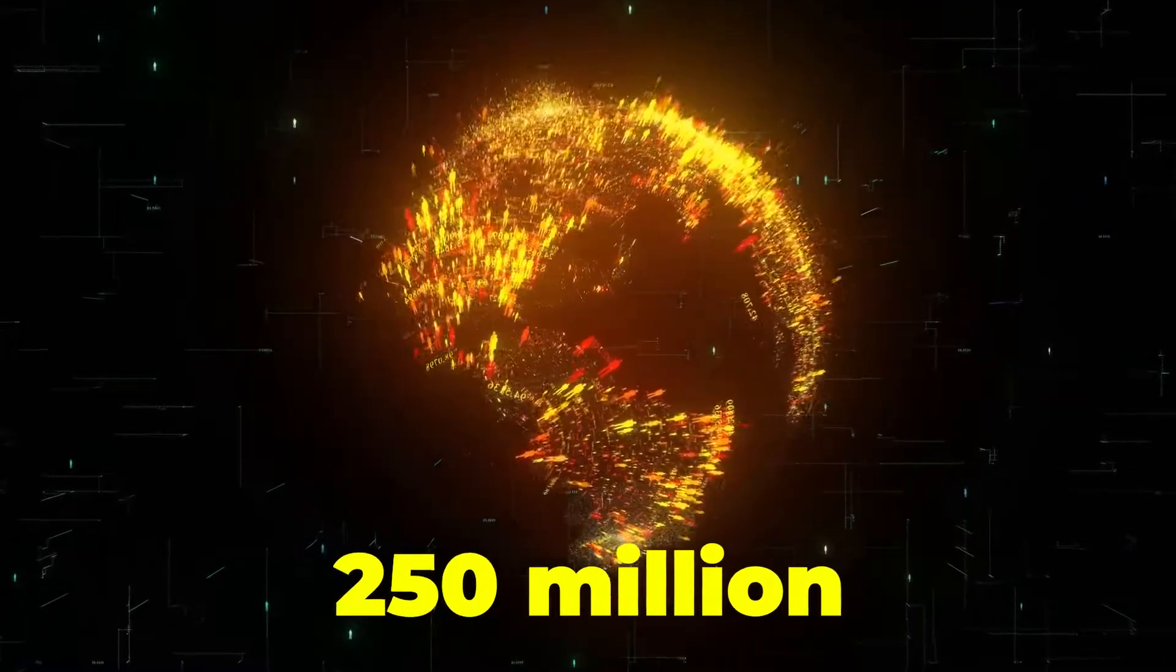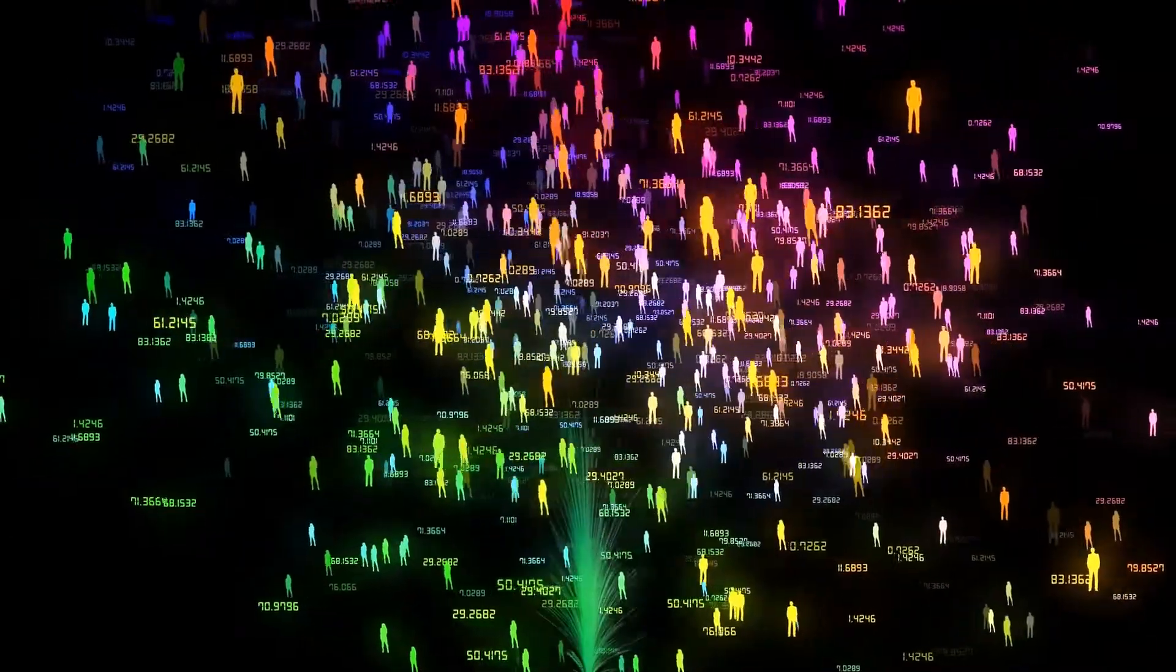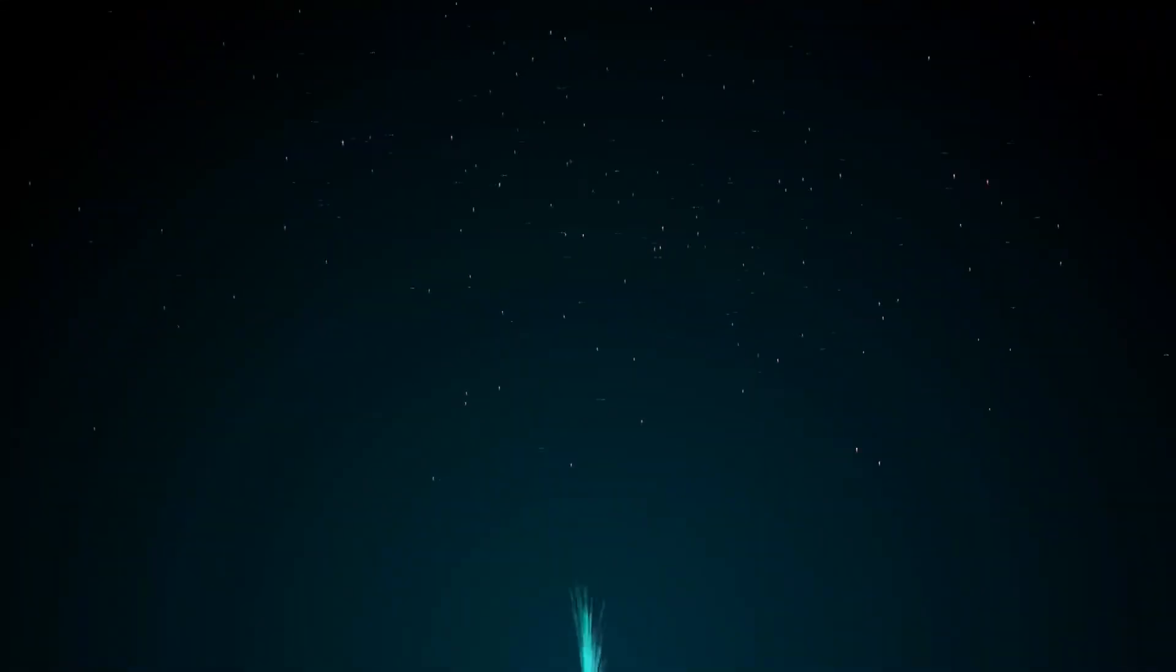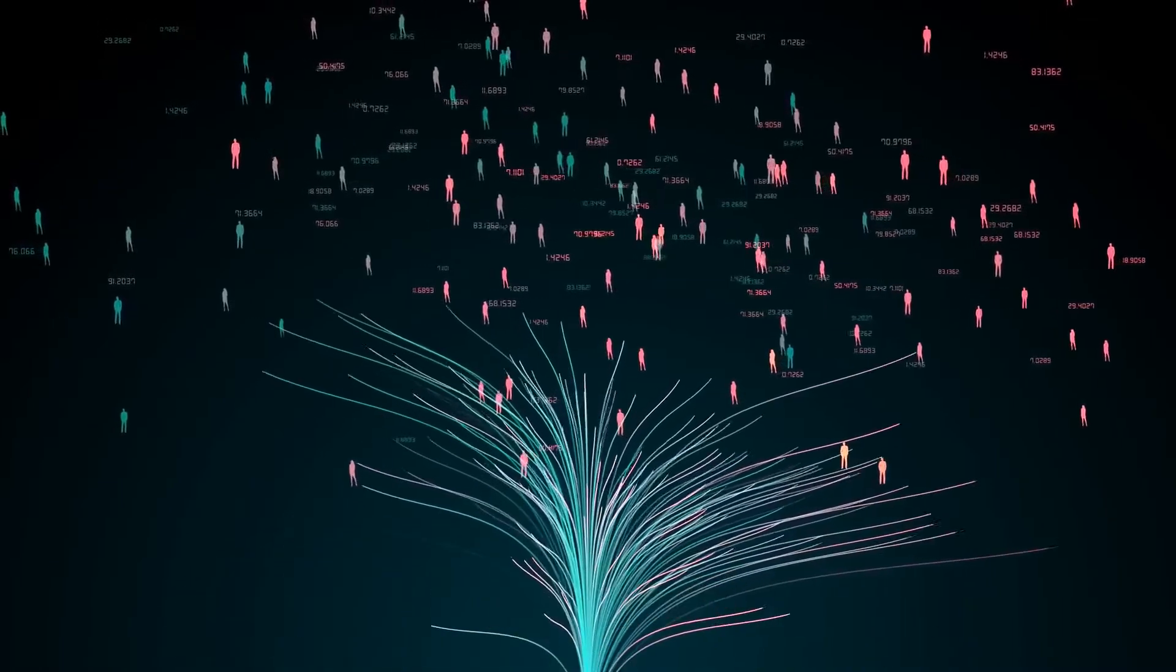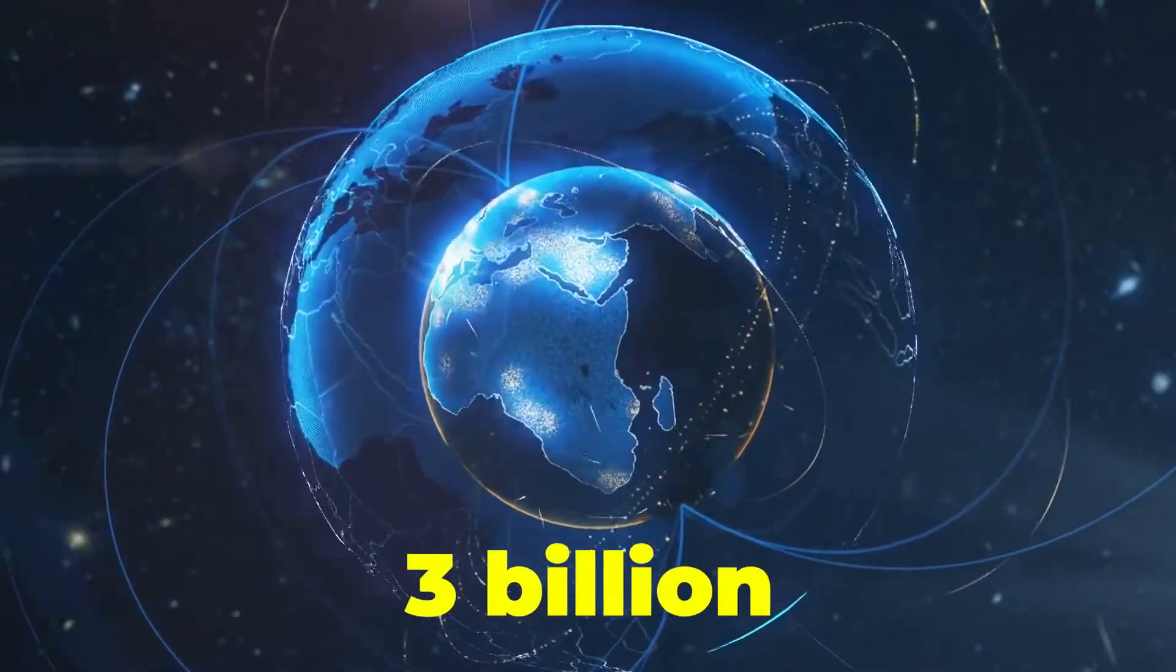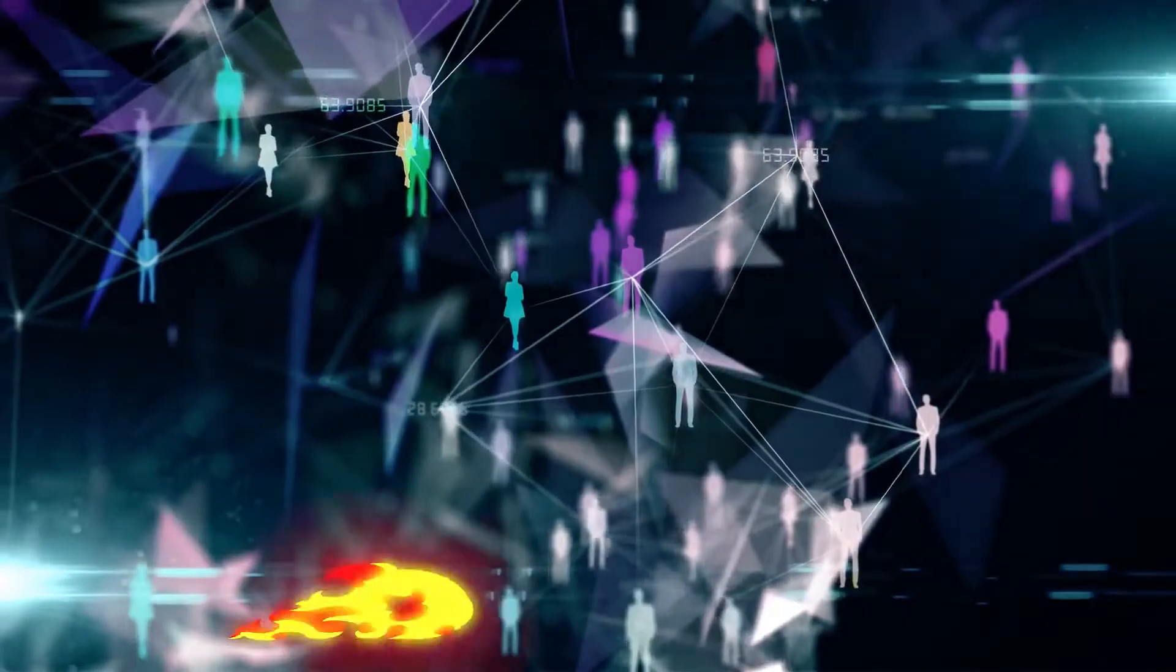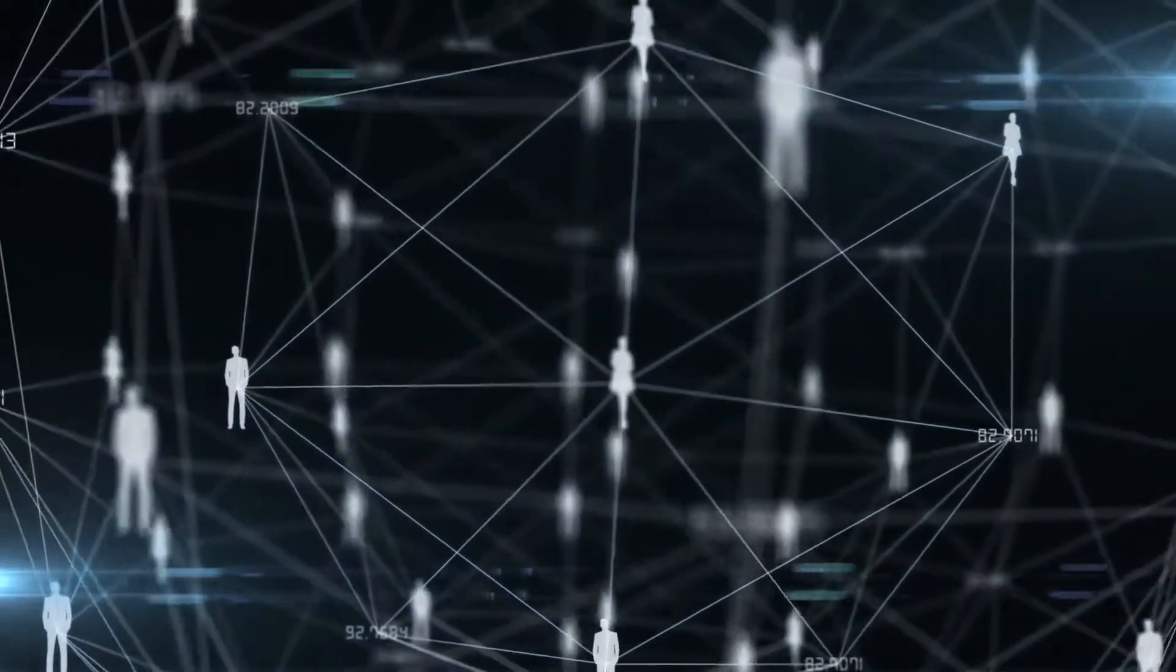Then the Industrial Revolution happened, and the human population went into overdrive. It took hundreds of thousands of years for humans to hit the 1 billion mark. That was in 1800. We added the next billion by 1928. In 1960, we hit 3 billion, and in 1975, 4 billion. That sounds like the route to an overpopulation apocalypse, right?